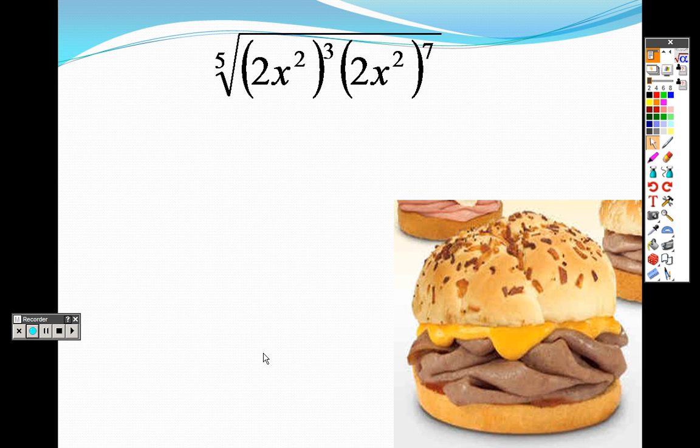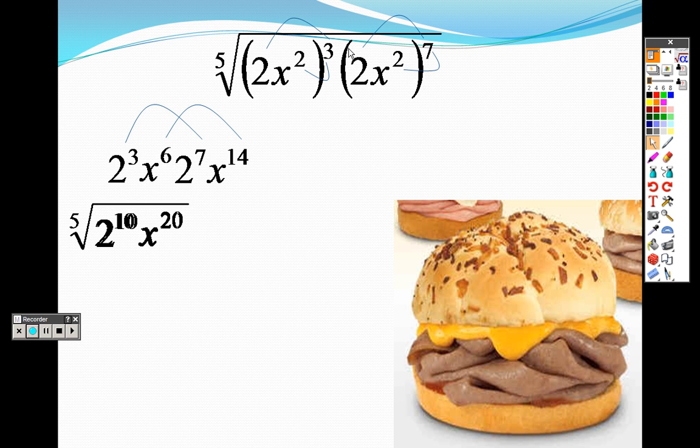And, last here, I'm going to use the parentheses here and go through first. So, that's two to the third, x to the sixth, that's two to the seventh, and x to the fourteenth. I combined everything, that's two to the tenth, and that is x to the twentieth, and I have a fifth root.